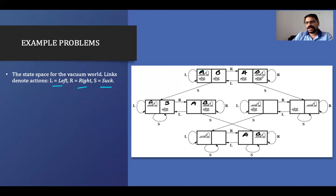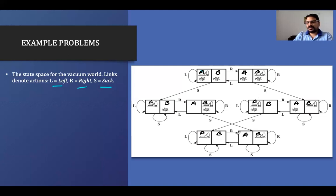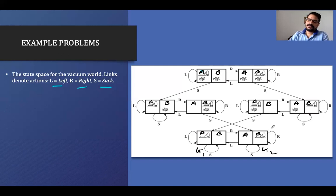When suction is performed, room B becomes clean while room A still has dirt. Going right stays in the same state; doing suction stays the same since it is already clean. Going left brings us to a state in room A. Doing suction there changes the state so both rooms are now clean. This is the goal state — both rooms should be clean. We have two goal states: G1 and G2.